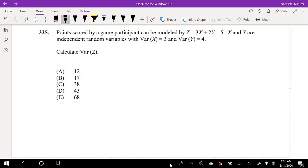Okay, let's get this started. So it says, points scored by game participants can be modeled by Z equals 3X plus 2Y minus 5. X and Y are independent random variables. We want to find variance of Z.